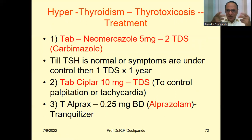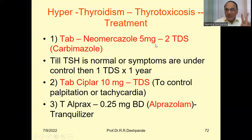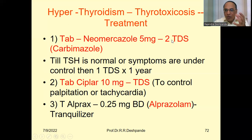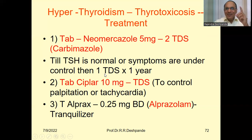Now for treatment — here is a ready-made prescription for doctors and students. Tablet Neo-Mercazole — generic name Carbimazole — 5 milligram, 2 tablets morning, 2 tablets afternoon, 2 tablets evening, i.e., 2 TDS. Generic medicines are always cheaper; generic shops are also available. Give this until TSH is normal and symptoms are under control, then gradually reduce the dose. Instead of 2 tablets three times a day, give 1 tablet morning, 1 afternoon, 1 evening for one year. Total one year of treatment.